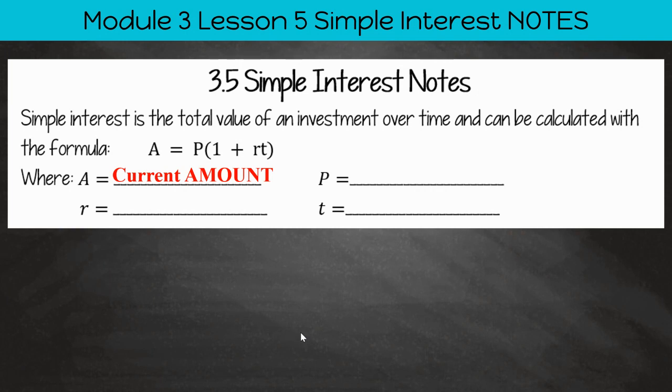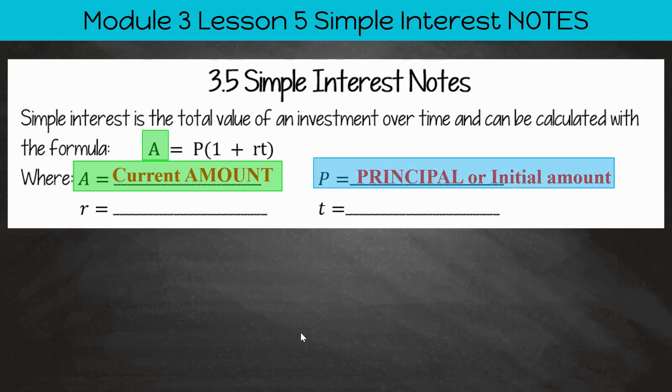So A stands for Current Amount, the current amount that's in the bank account or in the account or investment. We're going to highlight that in green. P stands for Principal or the Initial Amount. So the amount that you're putting into the investment. How much are you starting with? How much are you going to save from?